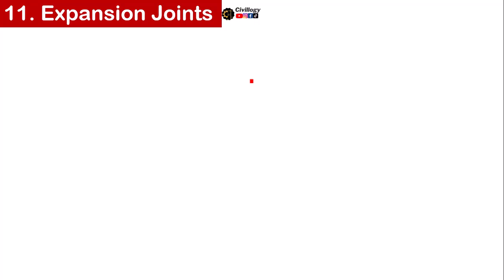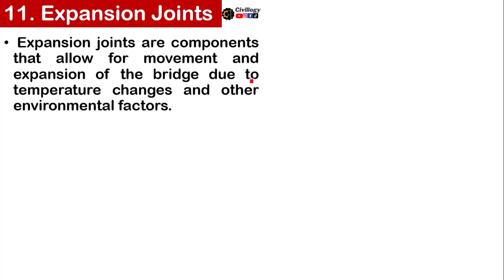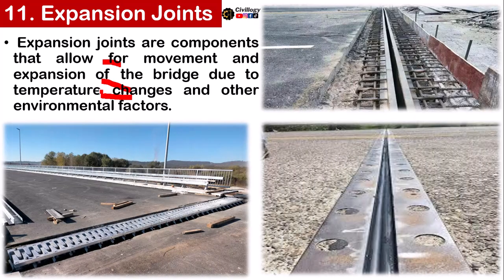On number eleven, we have Expansion Joints. Expansion joints are components that allow for movement and expansion of the bridge due to temperature changes and other environmental factors. You may have seen these types of gaps between bridges — such gaps are called expansion joints. For similar informative videos related to civil engineering, please subscribe to the channel and press the bell icon to get video updates. That's all for today.